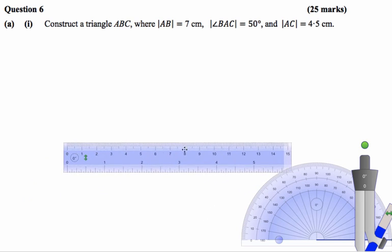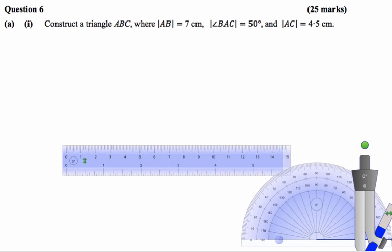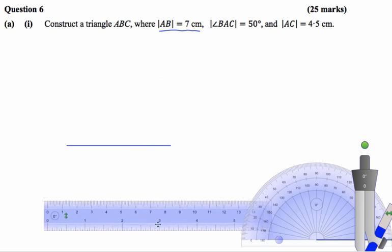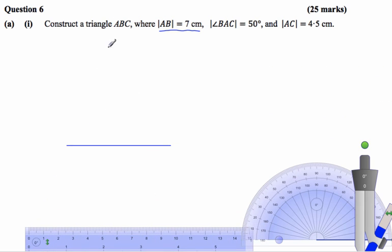I'm going to start by drawing the line AB which is 7cm. So I'll get my ruler out and do that. It's always a good idea to label the construction as you go along, so that's AB and that's 7cm.